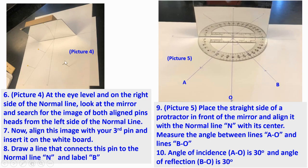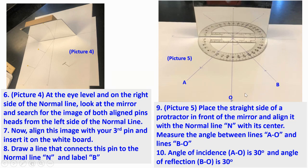At eye level and on the right side of the normal line, look at the mirror and search for the image of both aligned pins. Align this image with a third pin and insert it in the white board. Draw a line connecting the pin to the normal line and label it B. Place the straight side of a protractor in front of the mirror and align the normal line with its center. Measure the angle between lines AO and BO. In this case, the angle of incidence is 30 degrees and the angle of reflection is also 30 degrees. With this lab, we verify the law of reflection.